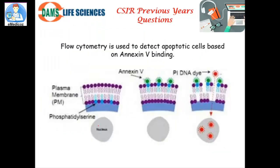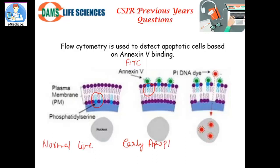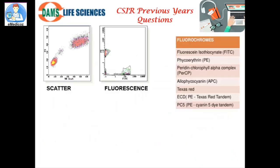Now back to the question. In a normal live cell, phosphatidylserine is present in the inner leaflet. During apoptosis it gets flipped to the outer surface, allowing annexin 5 labeled with FITC to bind to it — this is early apoptosis. When pores are also created, the PI dye can enter and bind to DNA in the nucleus — this is late apoptosis.